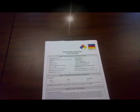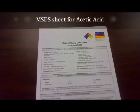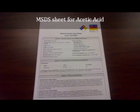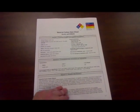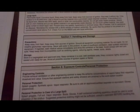Here is an example of a material safety data sheet for acetic acid. It contains information such as composition and information on ingredients, potential hazards, first aid measures, fire and explosion data, accidental release, handling and storage, exposure controls, physical and chemical properties, stability and reactivity data, toxicological information, ecological information, disposal, transport, and regulatory information regarding that particular chemical.